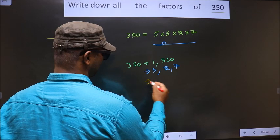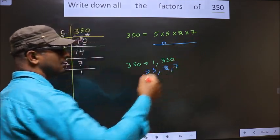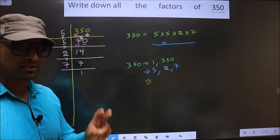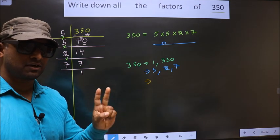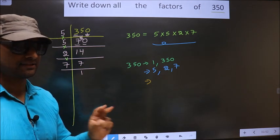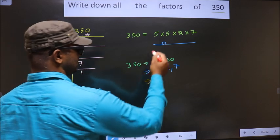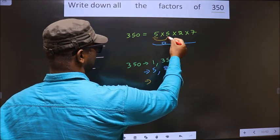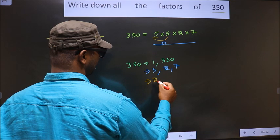Now from these numbers, you take a combination of 2 numbers. How do we do that? See. First, I fix 5. I combine with the 5. 5 into 5 is 25.